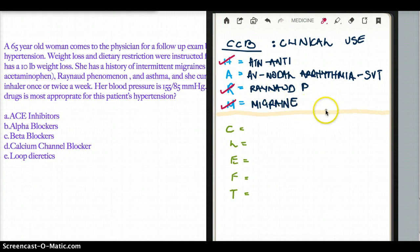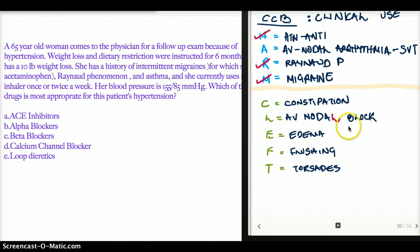So now, let's talk about the toxicities of calcium channel blockers really quickly. I remember the toxicities using the mnemonic CLEFT. C for constipation, L for AV nodal block. Yes, calcium channel blockers are used for depressing the SA and AV node, but too much block, you can have a heart block. AV nodal block. It can cause edema, it can cause flushing, and it can cause torsades, especially with Bepridil.